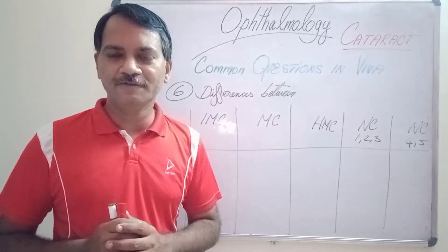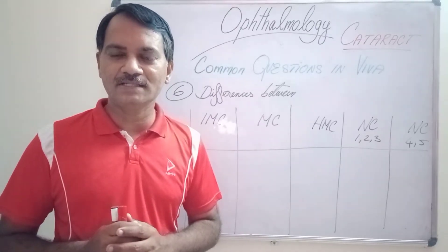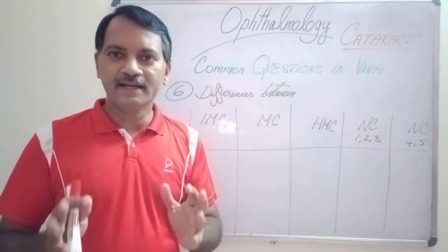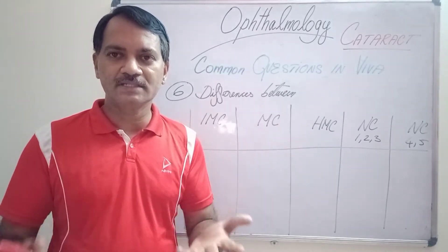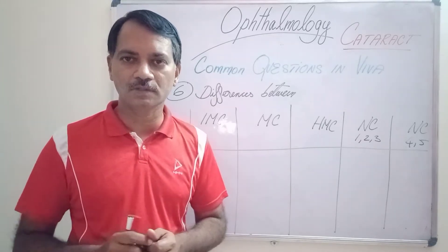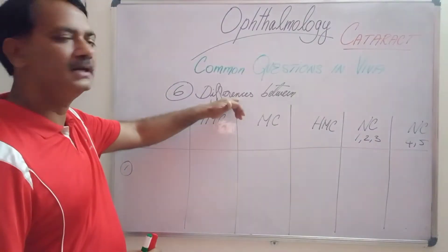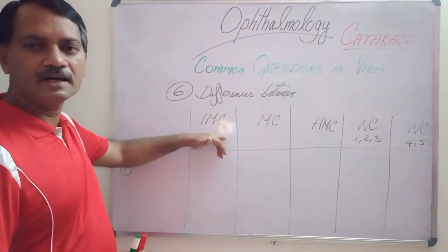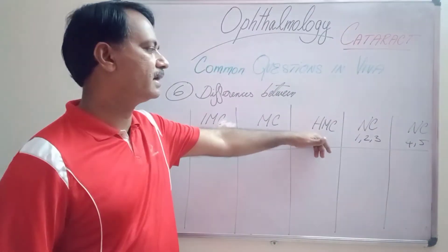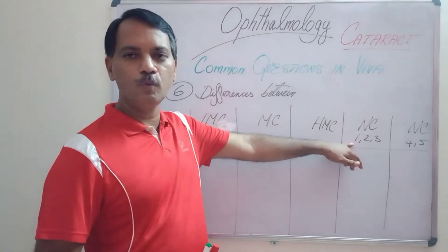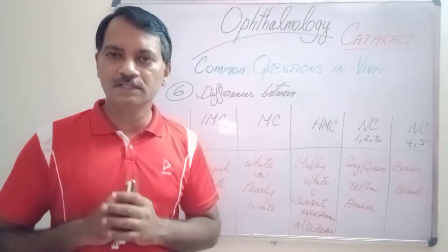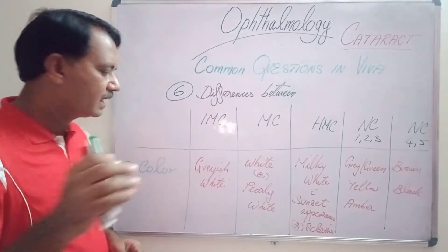Welcome back to Ophthalmology for Undergraduates and Postgraduate Weakness. In the cataract common questions asked in the VIVA, today we are going to discuss the difference between an immature cortical cataract, mature cortical cataract, hypermature cortical cataract, nuclear cataract grade 1, 2 and 3, and nuclear cataract grade 4 and 5.